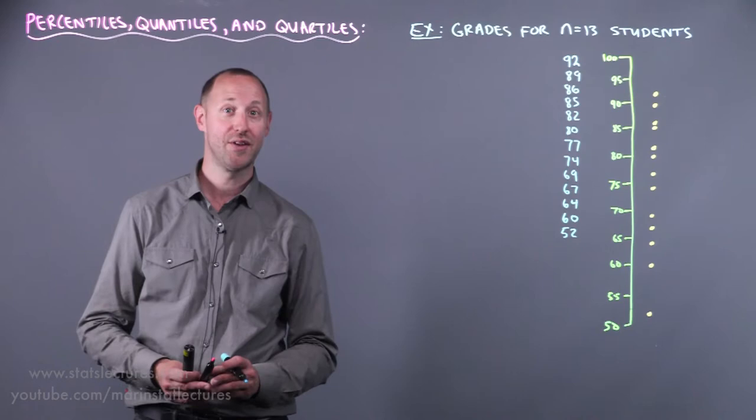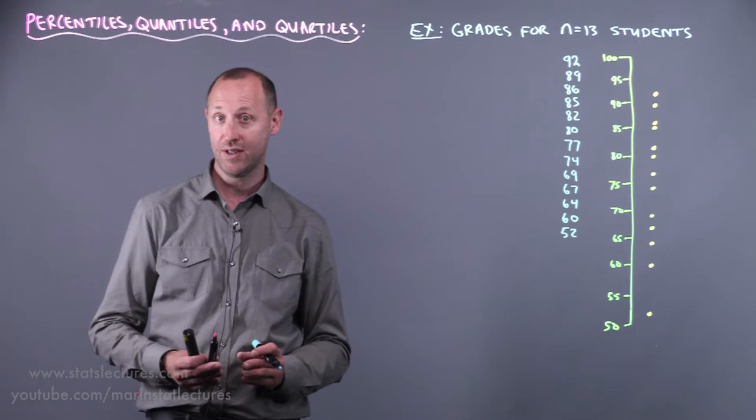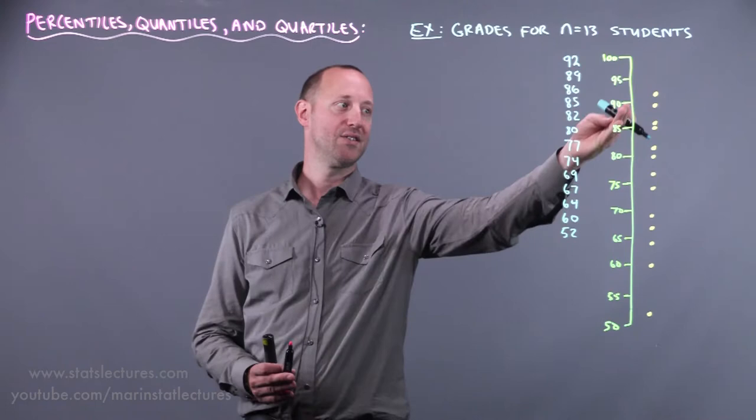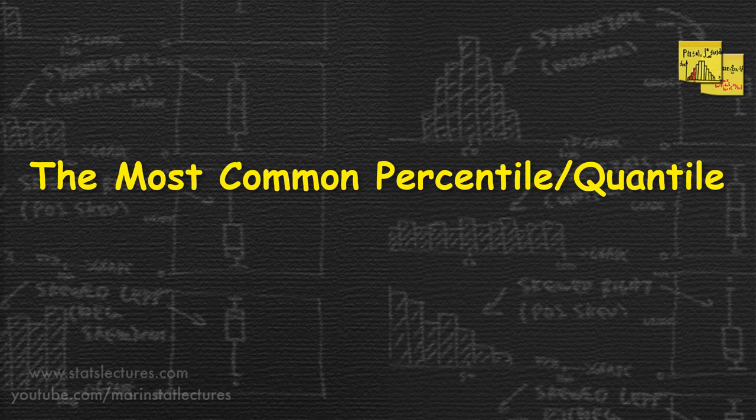We want to focus on the concept of what are they and what are they useful for. So in order to do this, I've got this example here looking at the grades for 13 students. I've kept the data set small and simple so that we can focus on the concepts. So here we've got the 13 grades as well as I've placed them on a number line here for visualization.